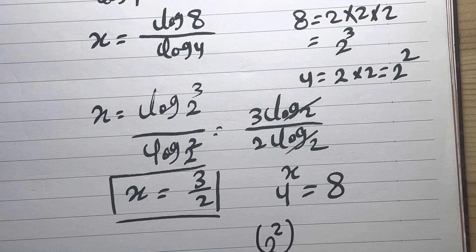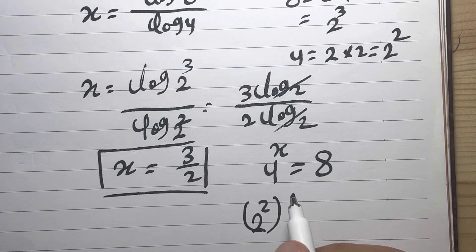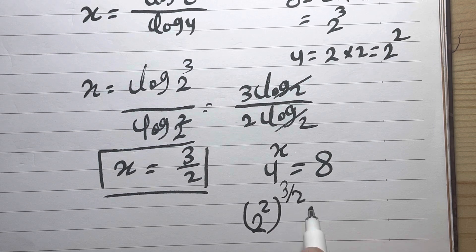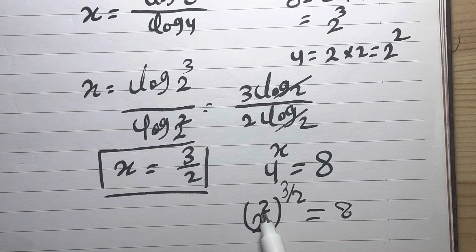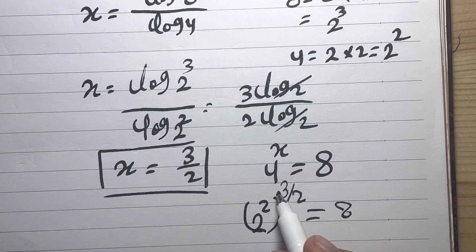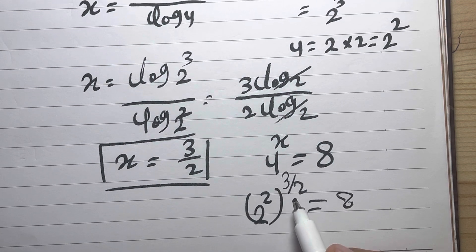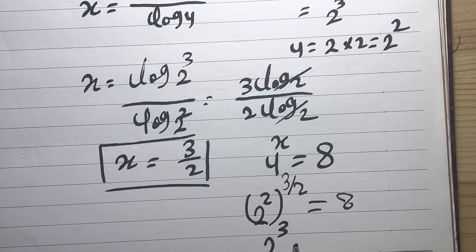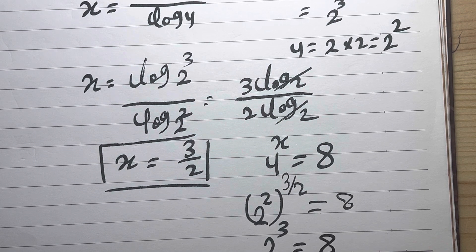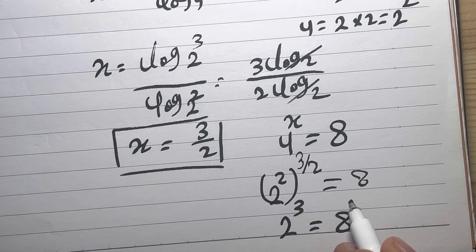Here the x we found is 3 over 2 equals 8. Power times power, we multiply together: 2 times 3 is 6 divided by 2 is 3, so 2^3 equals 8. This means our answer is correct because both sides are equal.